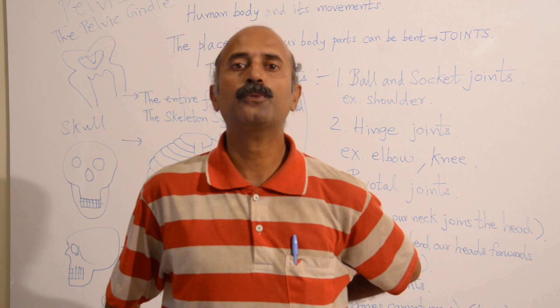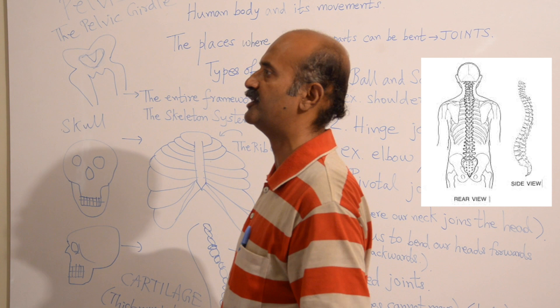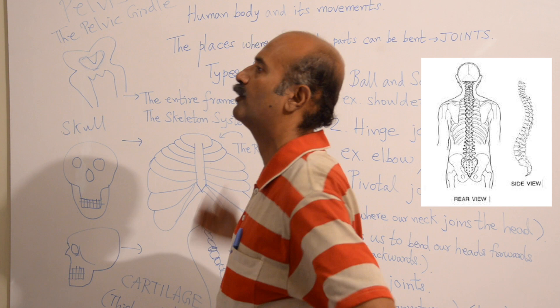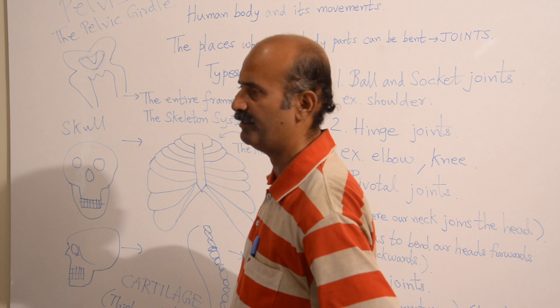The backbone, if you look at it, is in an S-shape. It starts from the neck area and goes to the lumbar area, just right next to the pelvis. We all have 33 bones in our backbone, which is absolutely crucial for our movement.